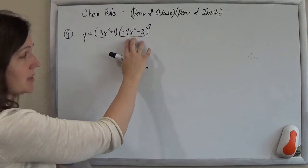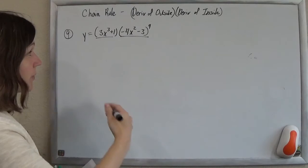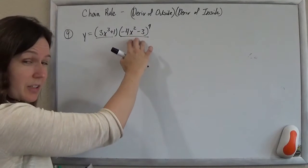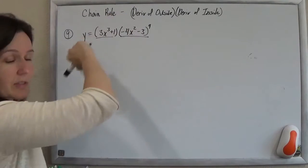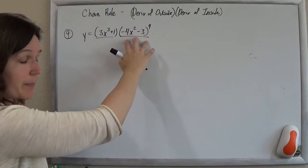But first, we have something times something, so we're doing product rule first. And when it comes time to take the derivative of this part, we'll have to use the chain rule to take the derivative of that. So here we go.